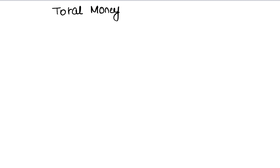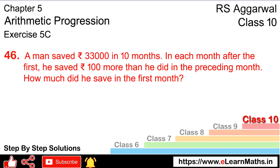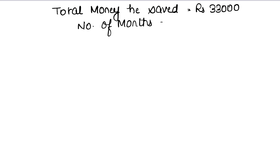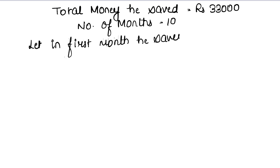So, we know the total money he saved is rupees 33,000, and the number of months is 10. Since every month he adds 100 rupees extra, we don't know the first month's savings, so let's say in the first month he saves x rupees.